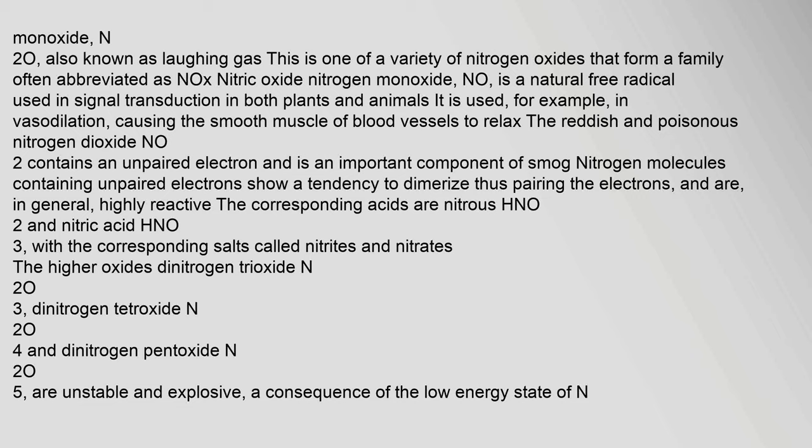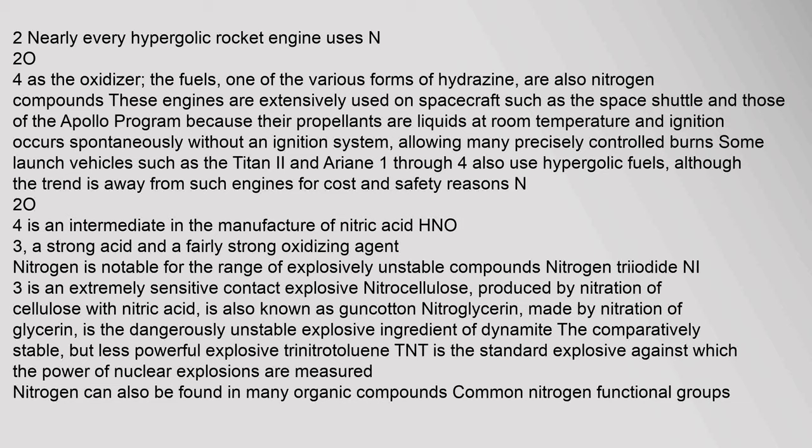The reddish and poisonous nitrogen dioxide NO2 contains an unpaired electron and is an important component of smog. Nitrogen molecules containing unpaired electrons show a tendency to dimerize, thus pairing the electrons, and are in general highly reactive. The corresponding acids are nitrous acid HNO2 and nitric acid HNO3, with the corresponding salts called nitrites and nitrates. The higher oxides — dinitrogen trioxide N2O3, dinitrogen tetroxide N2O4, and dinitrogen pentoxide N2O5 — are unstable and explosive, a consequence of the low energy state of N2. Nearly every hypergolic rocket engine uses N2O4 as the oxidizer.